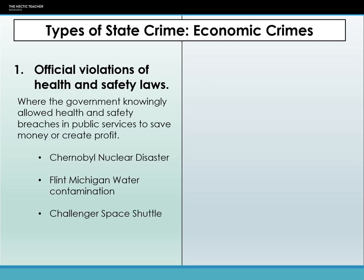Economic crimes fall into two types. The first is violations of health and safety laws, where governments knowingly allow health and safety breaches in public services to save money or create profit. We've discussed the Chernobyl nuclear disaster — a government-run power plant where, in order to get it running quicker, people were not properly trained and systems were not properly implemented, eventually leading to disaster. In Flint, Michigan, the government knowingly knew the water was undrinkable — people could set fire to what came out of their taps — and has done nothing about it. Flint, Michigan is still fighting for cleanup to this day.